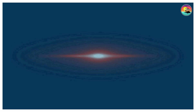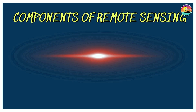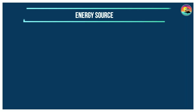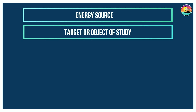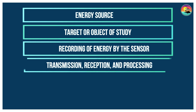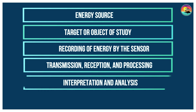In this video we are going to learn about the common components of remote sensing. The common components of remote sensing are: energy source, target or object of study, recording of energy by the sensor, transmission, reception and processing, interpretation and analysis, and application.